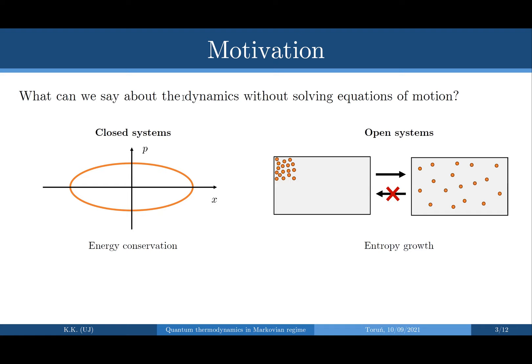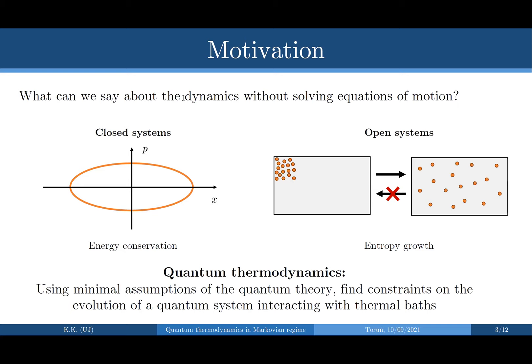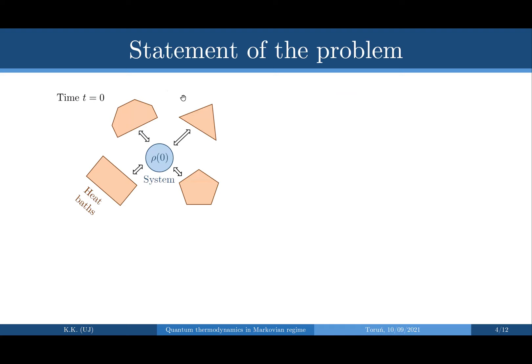For open systems the situation is much more complicated, but we can still say some non-trivial things. The standard example here is that of a gas of particles that starts in some corner of a box and then expands to occupy the full volume of the box, with the reverse process never actually happening. One of the main aims of the resource-theoretic approach to quantum thermodynamics is to try to say something non-trivial — what can happen, what can't happen — using minimal assumptions of quantum theory, for open systems that interact with thermal baths.